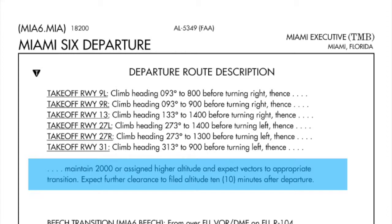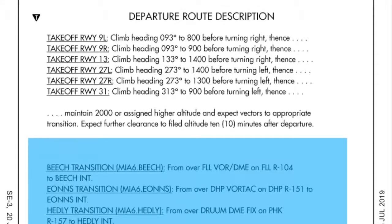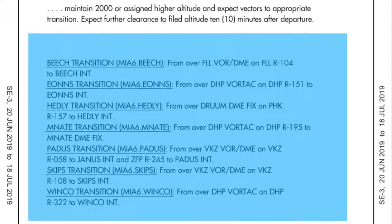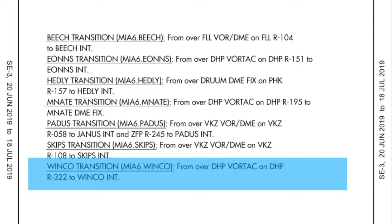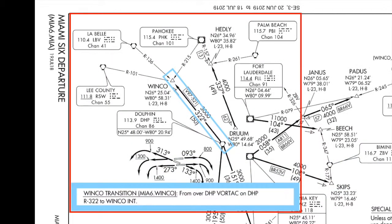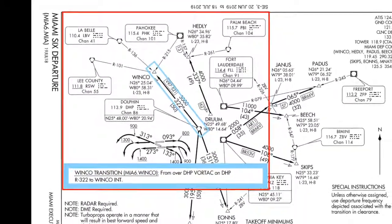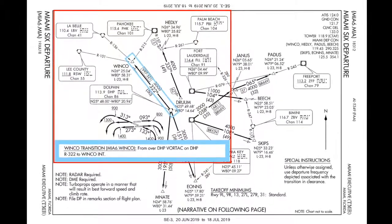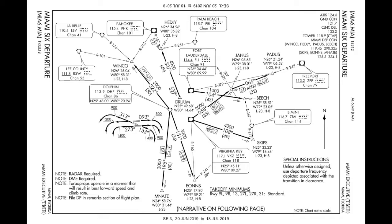After that, there are all kinds of transitions they can send you on. Depending on each transition, they have a fix — such as the Winko transition. At the bottom you'll see Winko: from over the Dolphin VOR on Dolphin Radial 322 to Winko Intersection. You would look back at the graphical format, find Dolphin DHP, then fly Radial 322 over to Winko and identify it from Pahokee VOR, LaBelle, or Lee County VOR. Each transition may use different VORs as a start, but you can expect vectors to join that transition. You would tune your VOR to Dolphin, put in the radial, and once the needle centers, fly that radial outbound until you get to your fix.